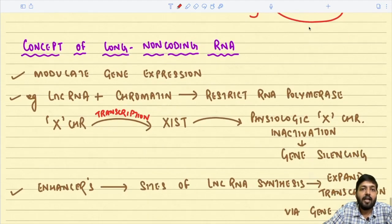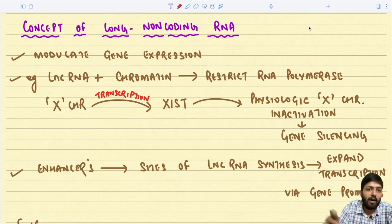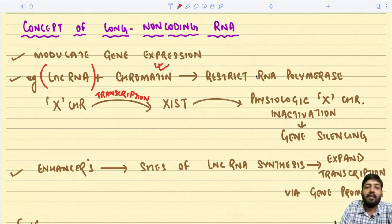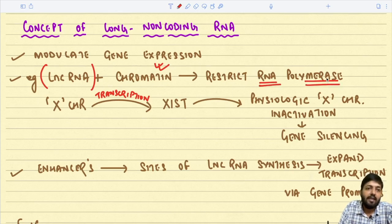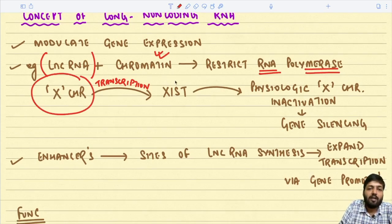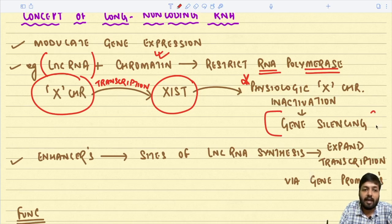There is another non-coding region — long non-coding RNA — which also modulates gene expression just like micro RNA. Long non-coding RNAs can combine with an area of the chromatin and restrict RNA polymerase. For example, the X chromosome transcribes a particular long non-coding RNA called Xist, and Xist itself causes physiological X chromosome inactivation leading to gene silencing.